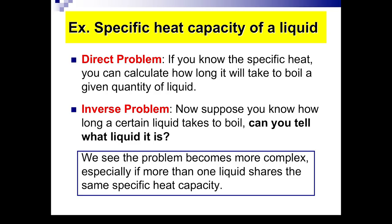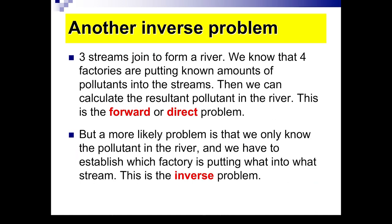The inverse problem is sometimes harder. Suppose that you know that a certain liquid takes a certain amount of time to boil, say five minutes. The inverse problem asks, can you tell me what liquid that is? So that's the inverse problem. And when we see that the problem becomes more complex, especially if more than one liquid shares the same specific heat capacity. Let me give another example. Suppose I know that three streams join to form a river and that four factories are putting known amounts of pollutants into the streams. Then we can actually calculate the resultant pollutant in the river. So this is the forward or direct problem. But a more likely problem is that we only know the pollutants in the river. And the problem is to determine which factory is putting what into what stream. And that is the inverse problem. So inverse problems are types of modeling problems which are challenging.